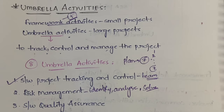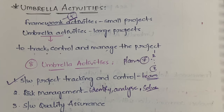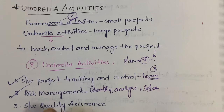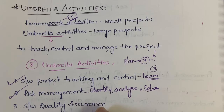Risk management is covered in detail in the fifth chapter with a complete video, but from the umbrella activity point of view, just defining what risk management is will be enough. Next comes software quality assurance.